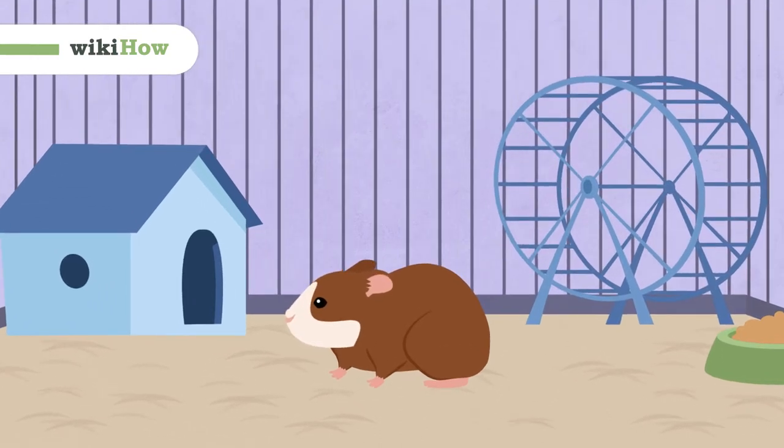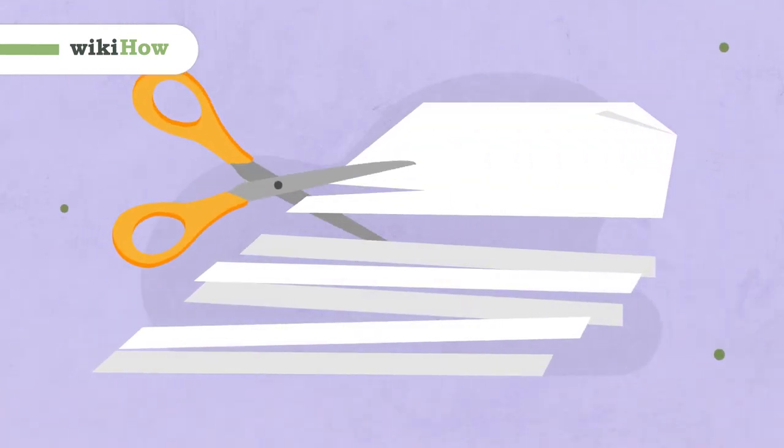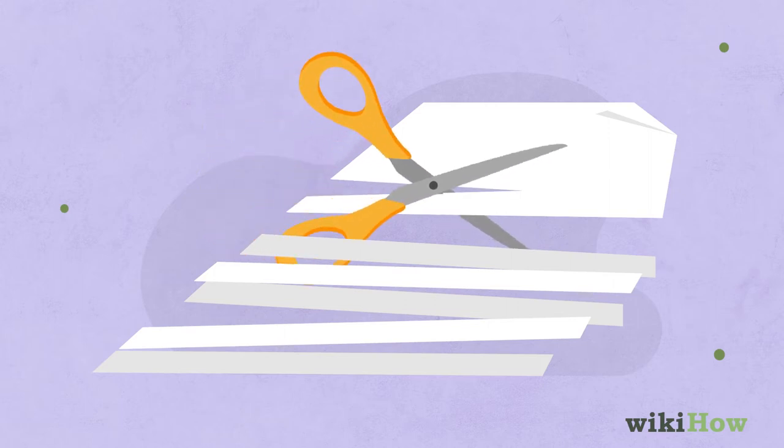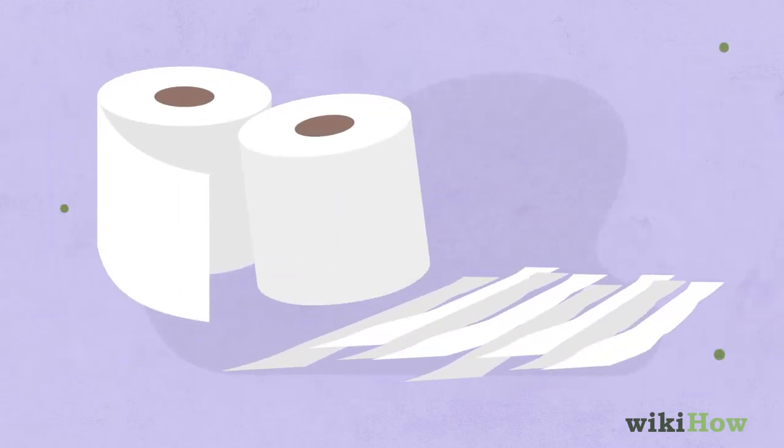To make safe bedding for your hamster, cut some plain dry white paper into thin strips. You can also tear up plain white toilet paper or paper towels.